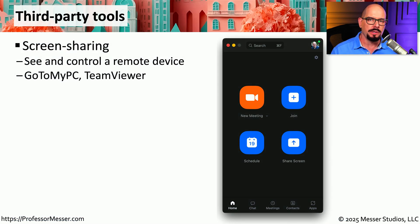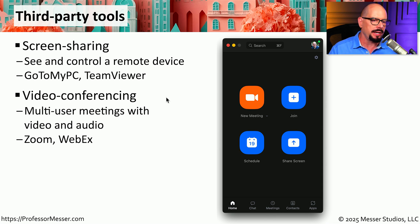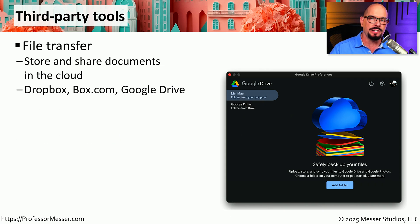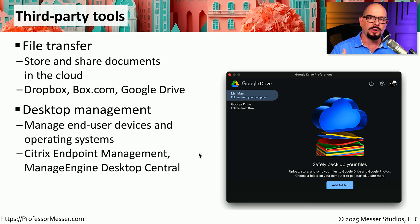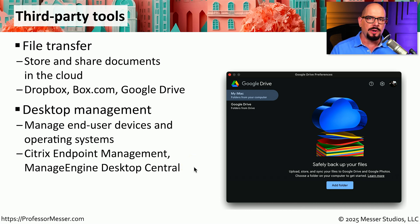You might also find a number of third-party tools that provide different remote management capabilities. For screen sharing, you can use GoToMyPC, TeamViewer, or a similar third-party utility. For videoconferencing, two of the most popular options are Zoom and WebEx. There are also tools that allow you to easily store and transfer files between systems — if you're using Dropbox, Box.com, or Google Drive, you've taken advantage of file synchronization technology. Or for ongoing desktop management, monitoring, and updating of systems, you might be using Citrix Endpoint Management or ManageEngine Desktop Central. All of these third-party utilities have advantages and disadvantages, but the key is making sure we use appropriate security, multi-factor authentication, and limit access to only authorized people.